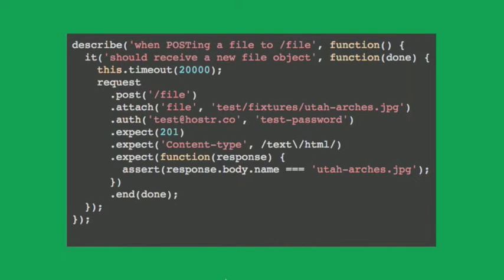This is a more complex example where I'm actually uploading a file using the POST verb. I can attach a file, give it some authentication headers, tell it what header I expect back, and the content type I expect back. I can set a regex as the value I expect to see rather than a string. And then I can do a little custom expect where I do my own assertions against the response, then call end with done to say everything went OK.